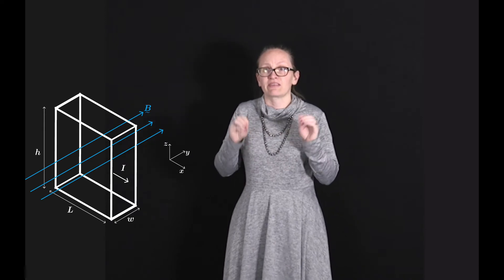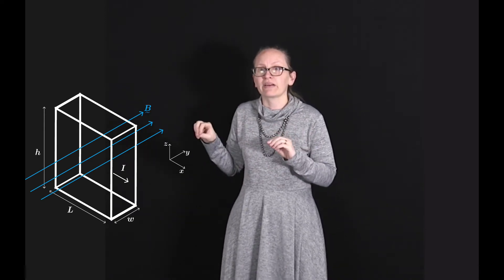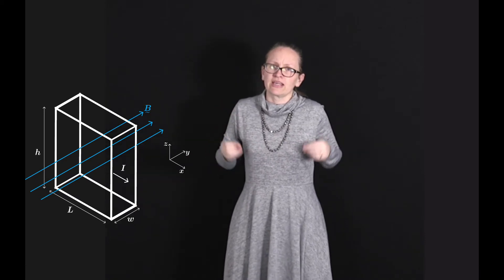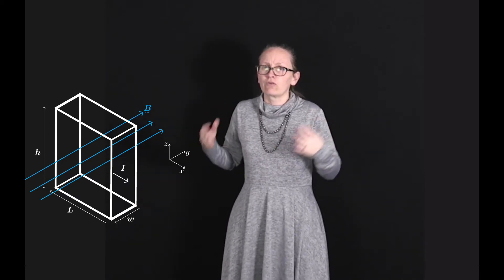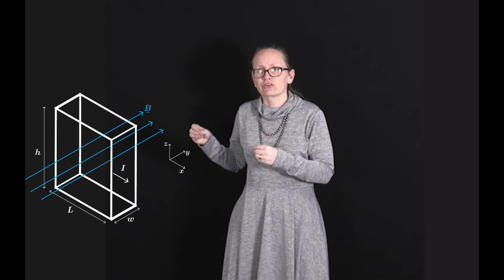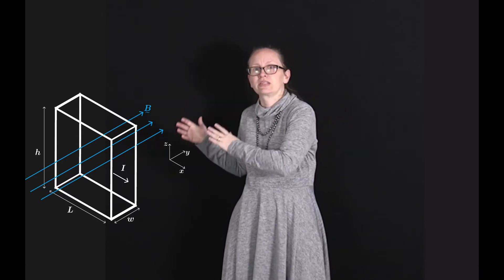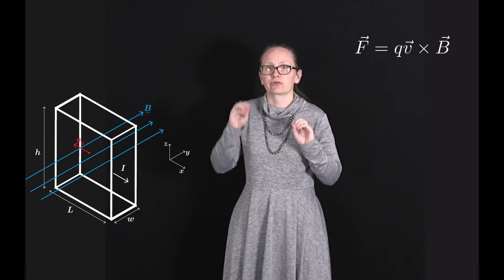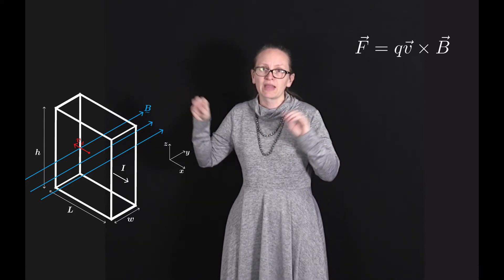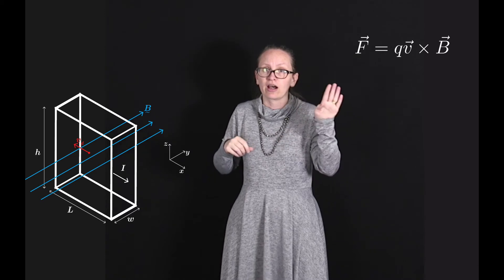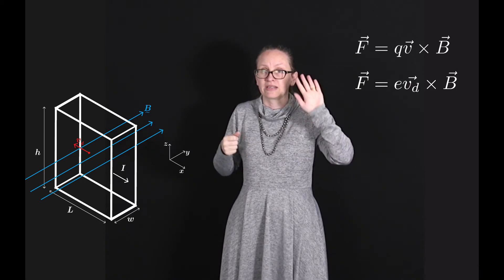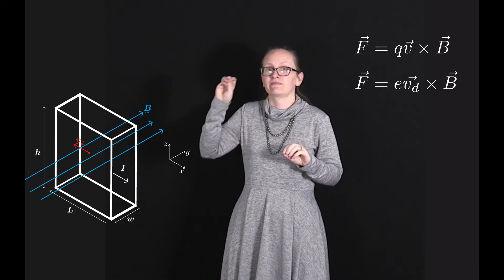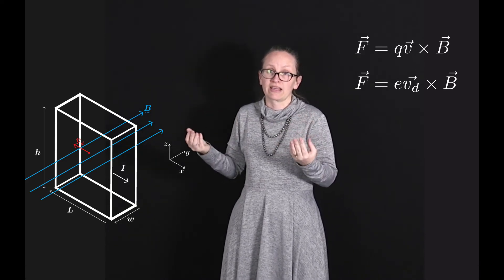Now let's impose a magnetic field B in the y direction on this conductor. We can work out the force on each of those electrons moving through it. The force on the charged particles is given by F = QV × B. Here the charge Q is e (the electron charge), the electrons are moving with the drift speed V_d, and the magnetic field strength is given.